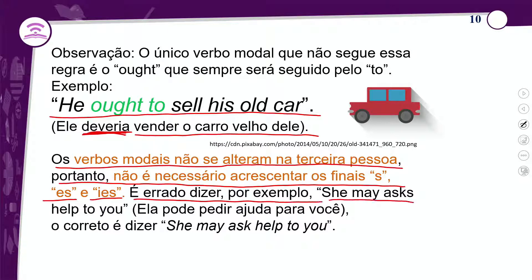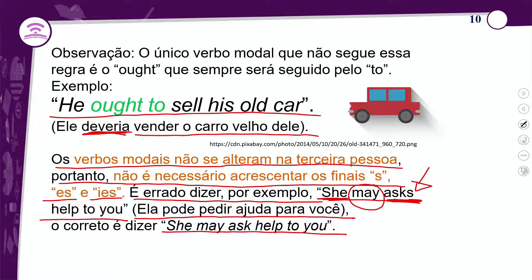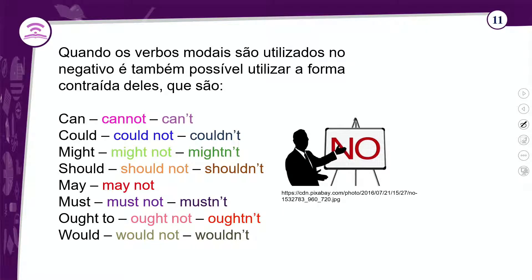É errado dizer 'she mays ask' — quando o modal está presente, o verbo principal não recebe o -s da terceira pessoa do singular, que viria normalmente no Simple Present sem modal. O correto é: 'She may ask for help' — ela pode pedir ajuda, expressando probabilidade.